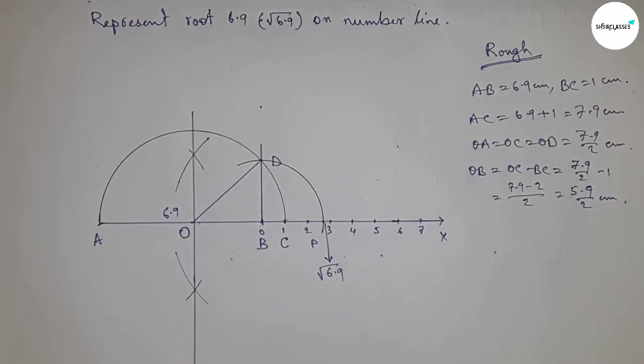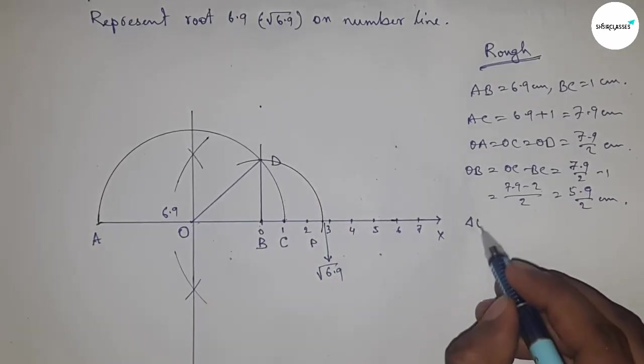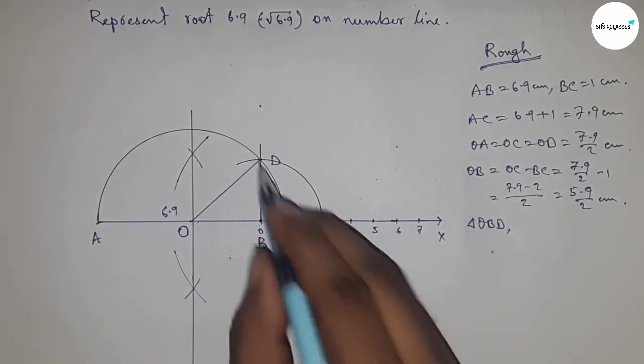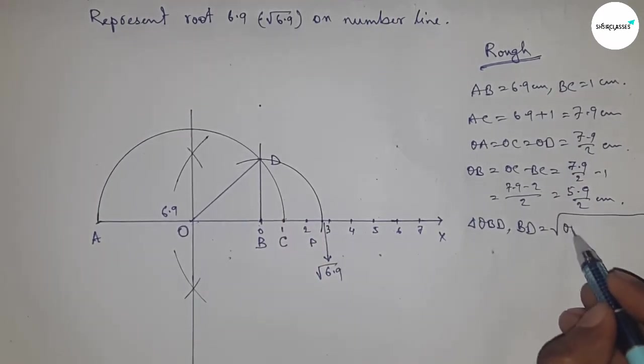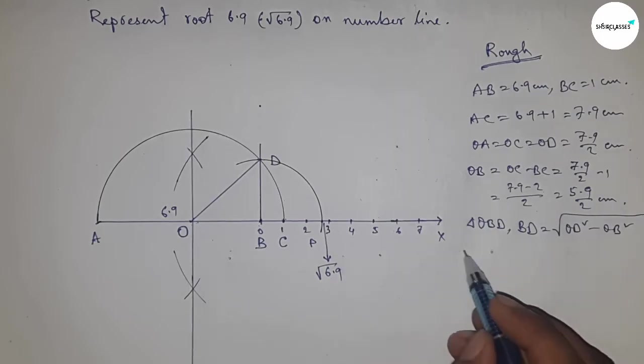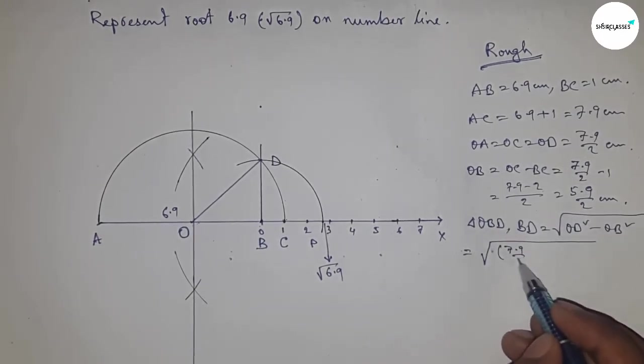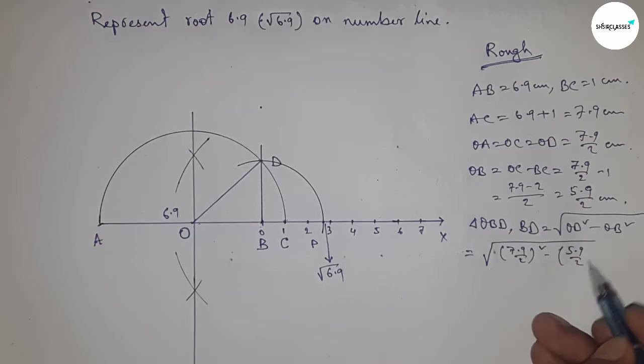From right angle triangle OBD, we can write BD equals root over, by Pythagoras theorem, OD square minus OB square. Now put the value of OD and OB.